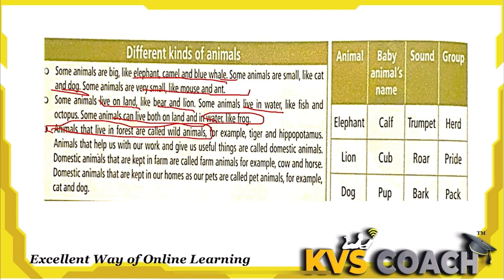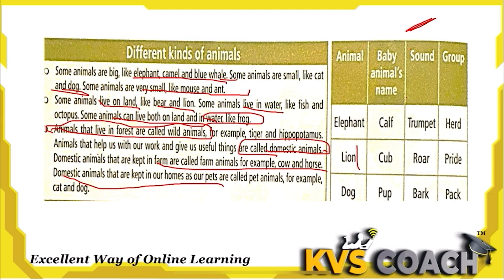Animals that help us work and give us useful things are known as domestic animals. For example, cow is a domestic animal because it gives us milk, and horse is a domestic animal because we use it to pull carts. Pets like cat, dog, and parrot kept in our homes are also domestic animals.